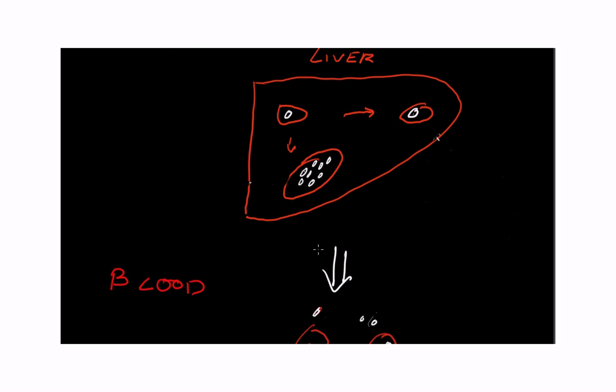What those sporozoites do is actually travel through the blood to the liver, as represented here, and try and get through the Kupffer cells, and then they actually become this infected liver cell here. Once it's in there, the actual parasite itself can do one of two things.